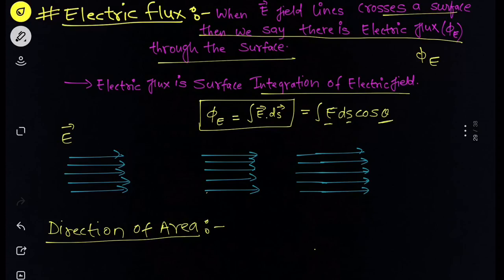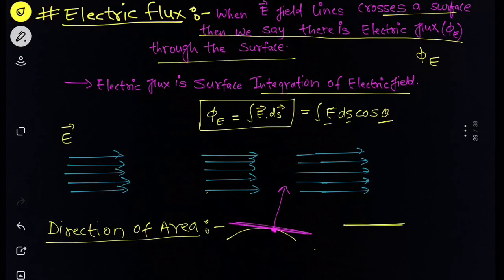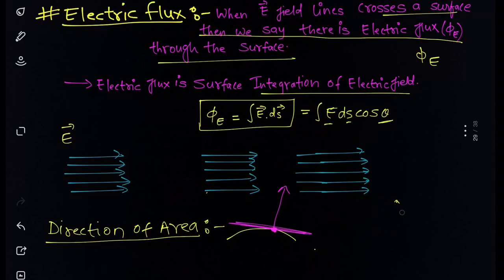What is the area vector — how do we show the direction of a particular area? For a curved surface, at any point we draw a tangent and then draw the perpendicular to that tangent — that perpendicular is the area vector at that point. For a flat surface, the tangent is parallel to the surface, so the area vector direction is perpendicular to the flat surface.